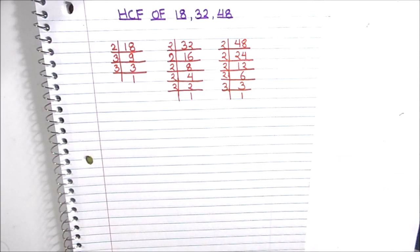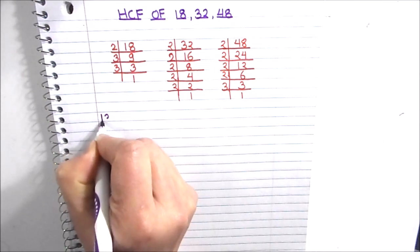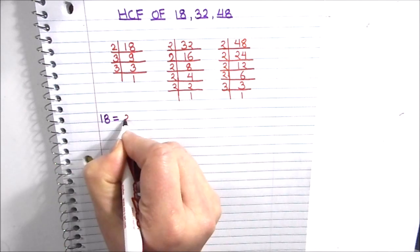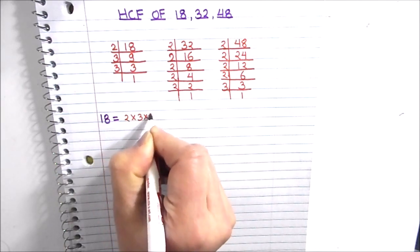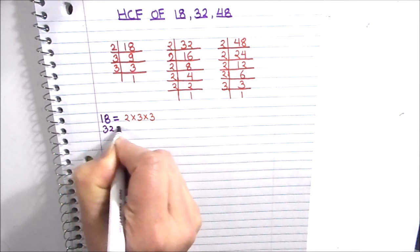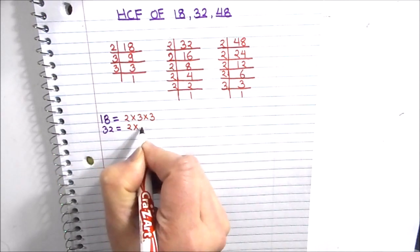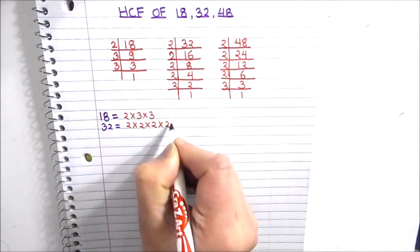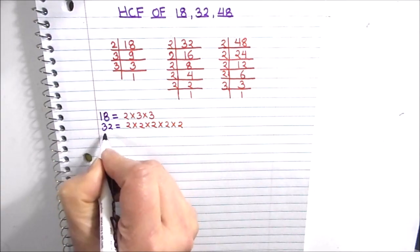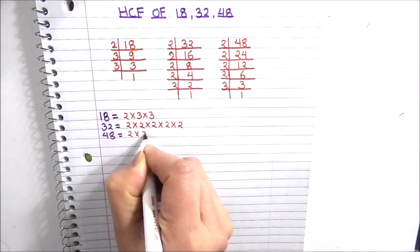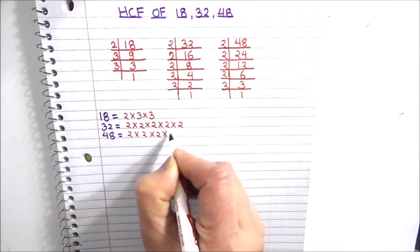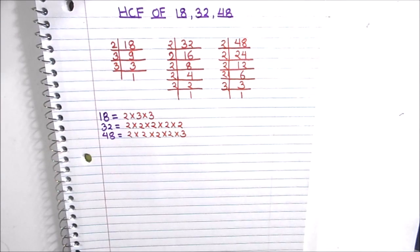Now we have divided all the three numbers and we got the prime factors of all the three numbers. Let's write the three numbers as the product of their prime factors. We will start with 18. 18 is 2 times 3 times 3. 32 can be written as 2 times 2 times 2 times 2 times 2. Now for finding the HCF of the three numbers we are going to find the common factors in between the three numbers.